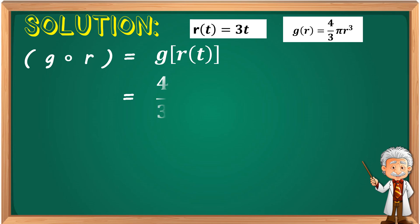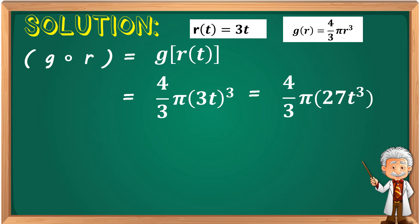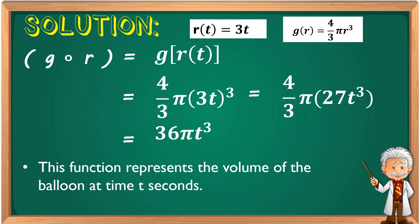So g∘r equals (4/3)π(3t)³. Cubing 3t: 3³ = 3 × 3 × 3 = 27, and t³ remains t³. So we get (4/3)π × 27t³. Since 27 divided by 3 is 9, and 9 times 4 is 36, the result is 36πt³. This function represents the volume of the balloon at time t seconds.